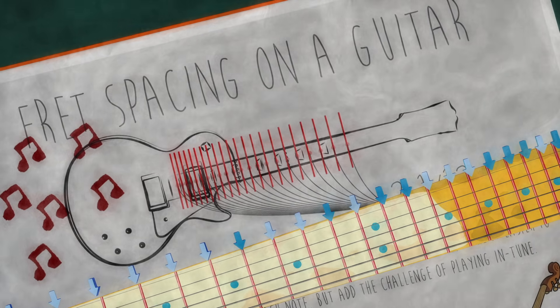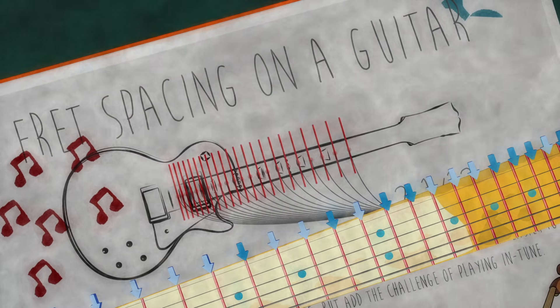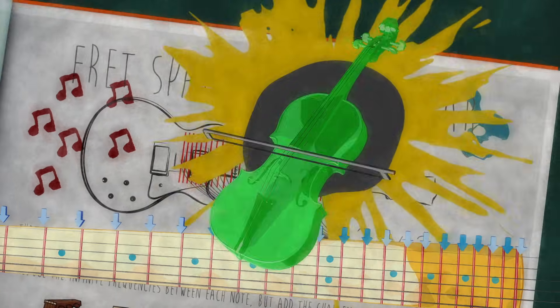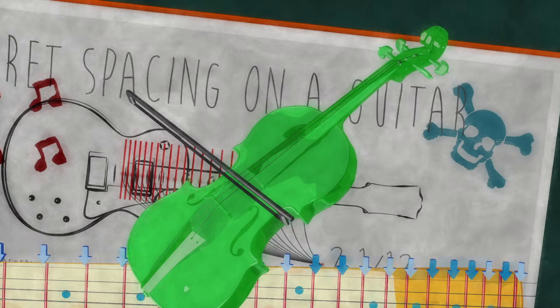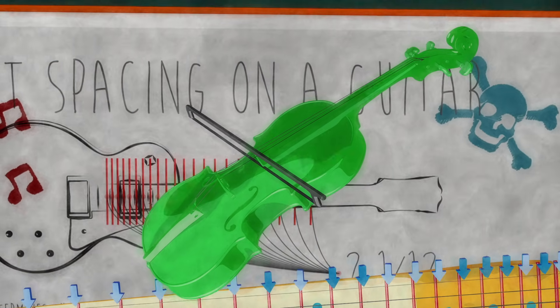Each fret divides the string's remaining length by 2 to the 1/12th power, making the frequencies increase by half-steps. Fretless instruments, like violins, make it easier to produce the infinite frequencies between each note, but add to the challenge of playing in tune.